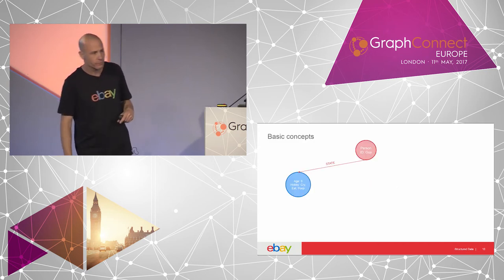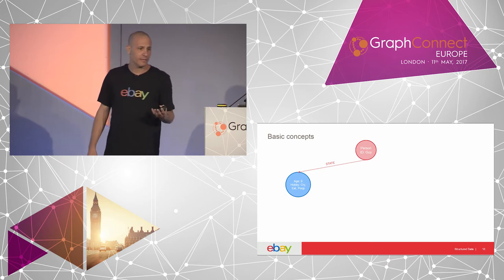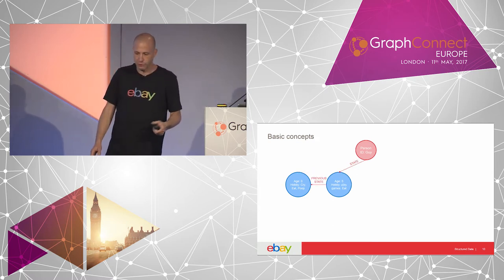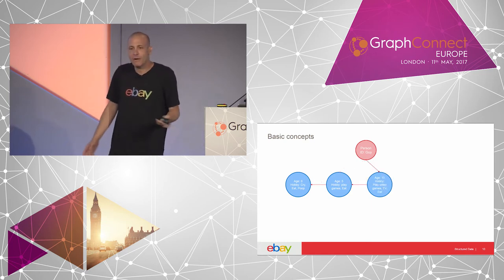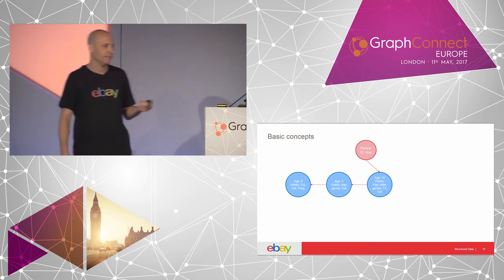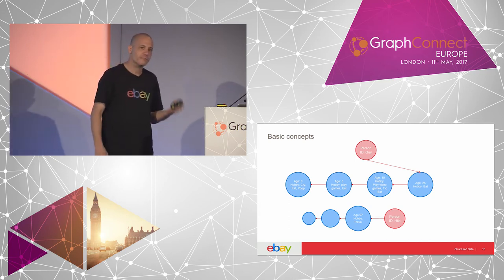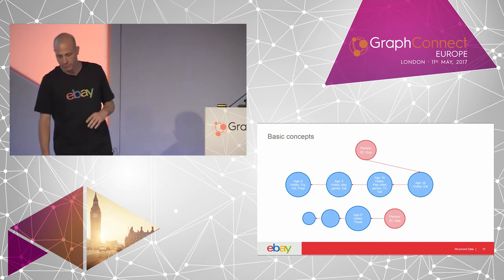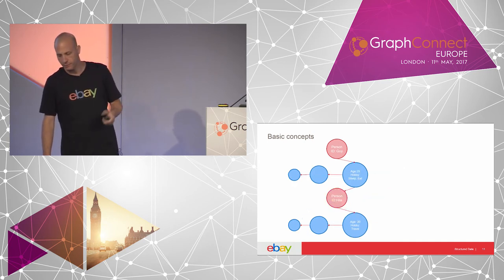Let's take me as an example. I'm an entity, of type person. I have an ID — Guy, just for simplicity. And I have state. When I was born, I was at age zero — my hobbies were eat, poop, and cry. Something changed and I moved forward: at age five I had different hobbies — play games and eat. At age 15, my hobbies were playing, watching TV, and eat — the eating part is pretty constant. But something changed when I was 26: another entity came into the picture, also of type person, with ID Hila. She has her own state in her life, and from that moment we are related.